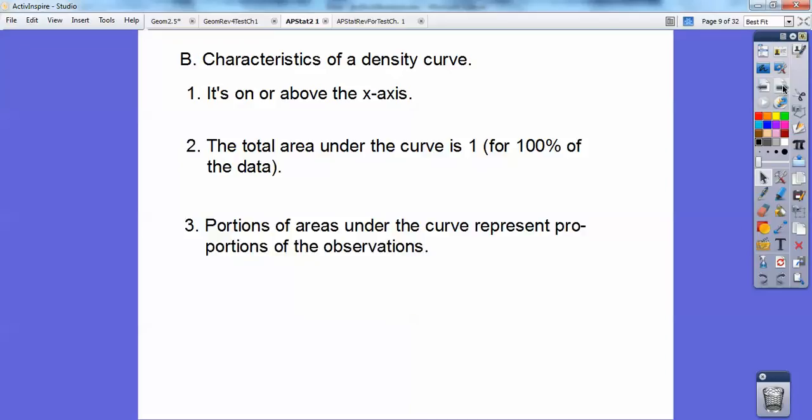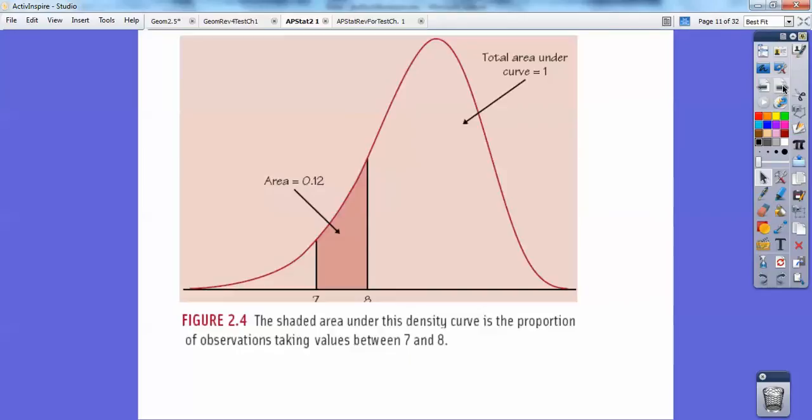And portions under the curve represent proportions of the observations. You'll get lots more of that later. So look at figure 2.4 on page 81. This area right here, this whole area, this is a density curve. The whole area is 1. That's what this says right here.